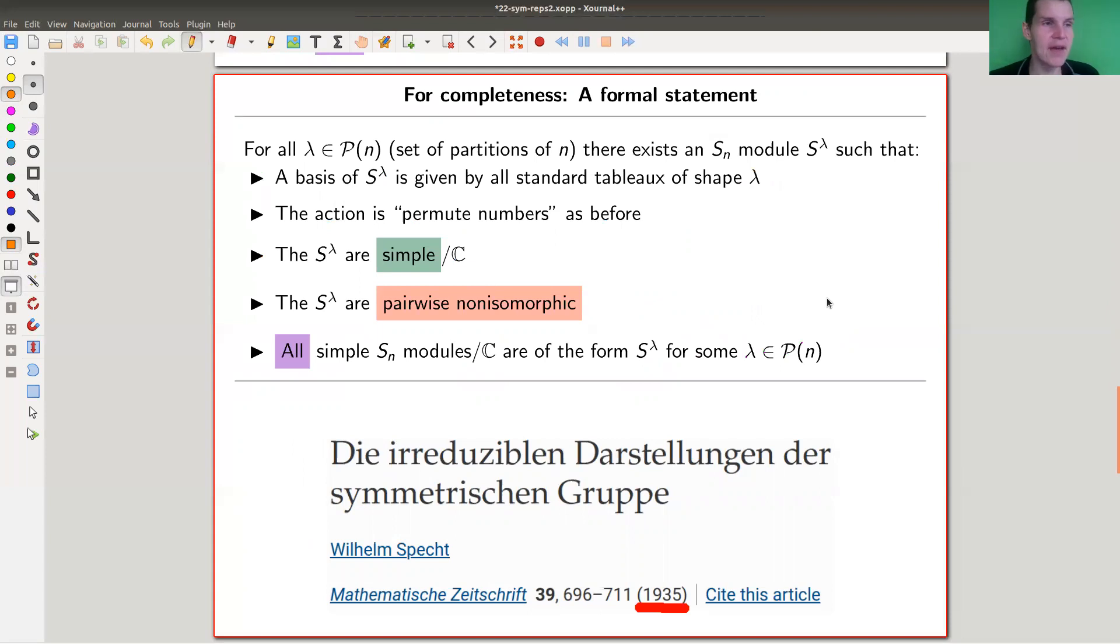Then you verify it works. So the statement here is you can write down those modules and they're called Specht modules, named after Wilhelm Specht. Basically there exists such a module associated to each partition, which has the correct dimension, which is simple, and they are pairwise non-isomorphic, and all simple modules appear. The perfect type of statement you would like to see here.